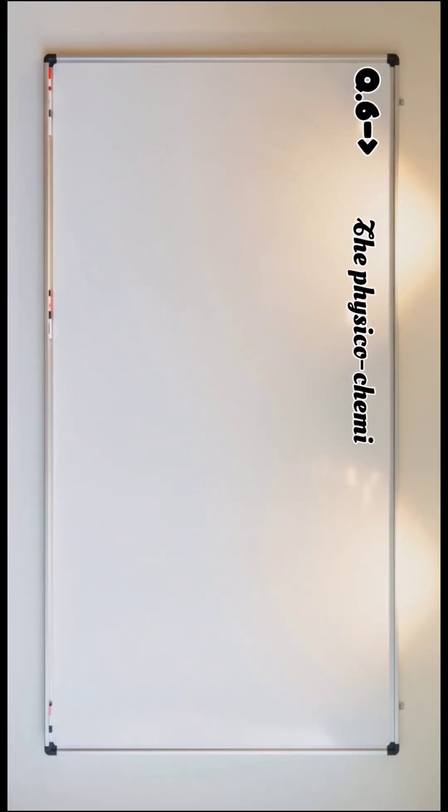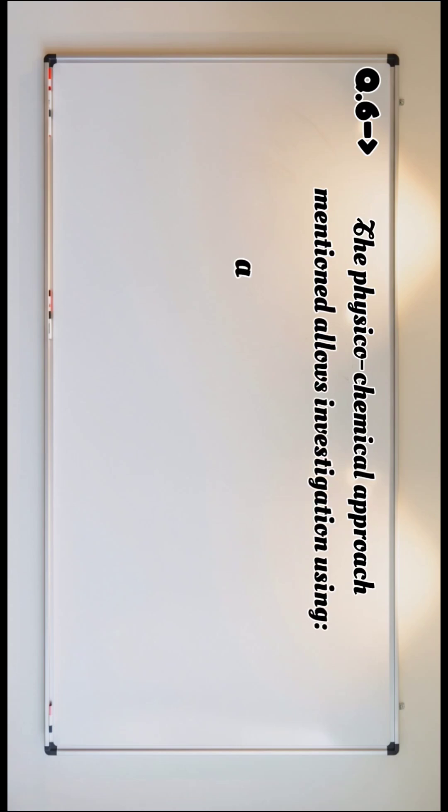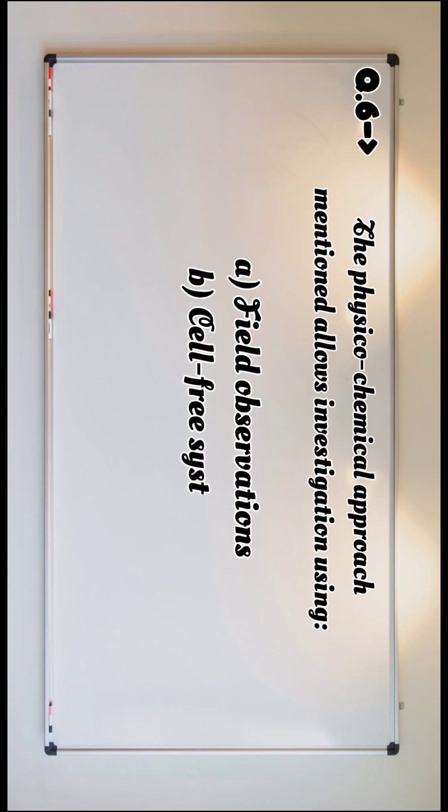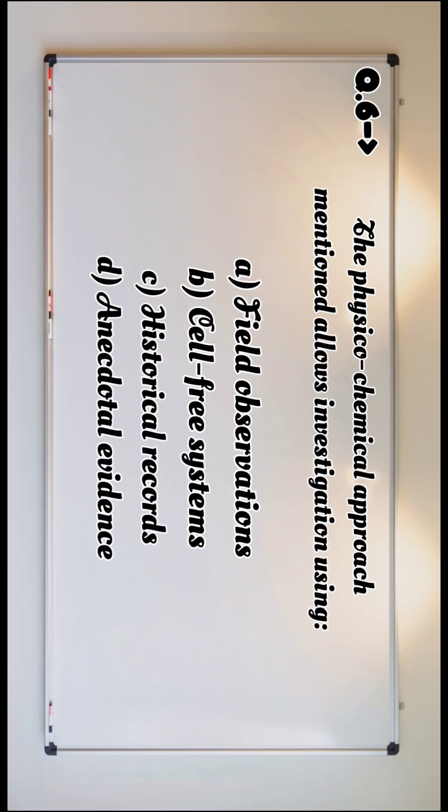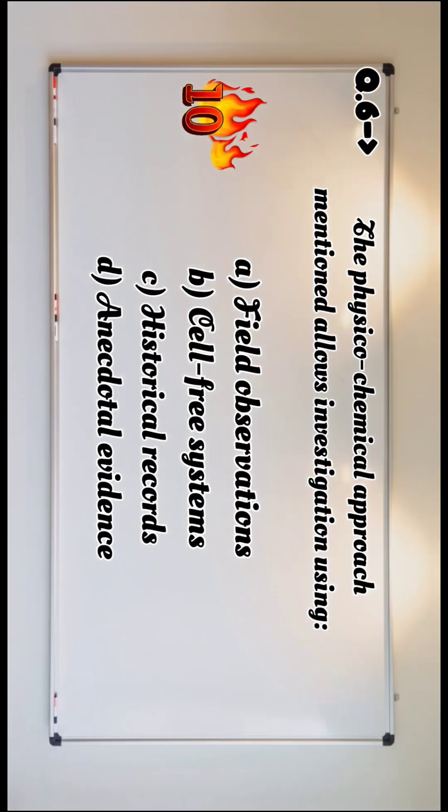Question number six: The physico-chemical approach mentioned allows investigation using: a) field observation, b) cell-free systems, c) historical records, d) anecdotal evidence. Countdown begins in ten, nine, eight, seven, six, five, four, three, two, one.